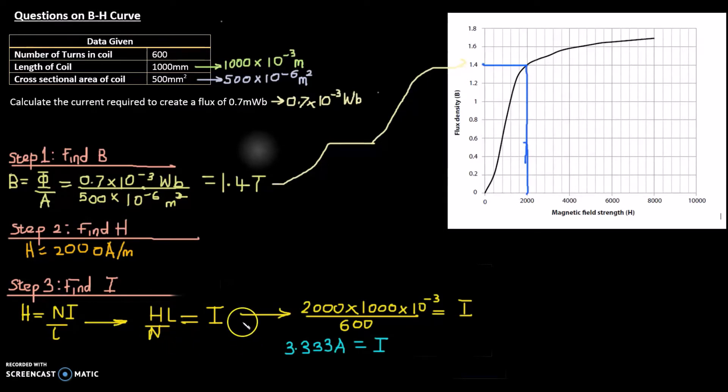If we put our numbers in, 2000 for the H, the magnetic field strength, and the length is a thousand times 10 to power minus 3, so multiply those two together. A thousand times 10 to power minus 3 is just going to be 1, but you can put it in your calculator like that and divide it by the number of turns which is 600. If you pop that in your calculator you get 3.333 amps, and that is your current. Problem solved.